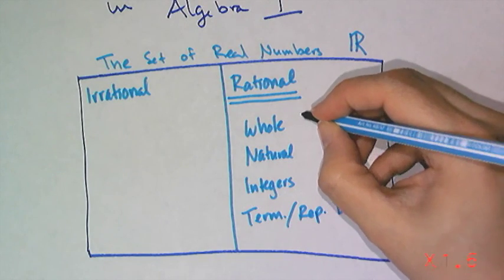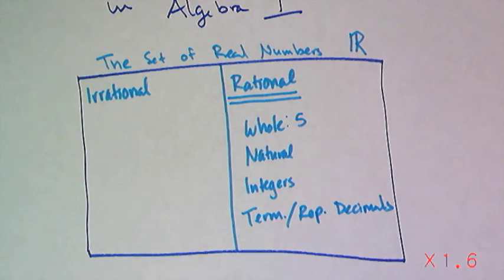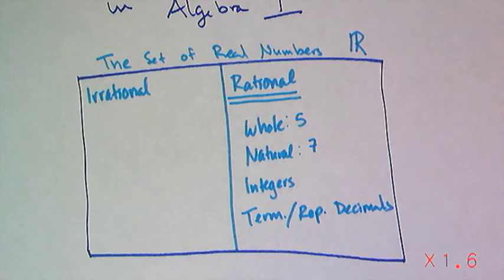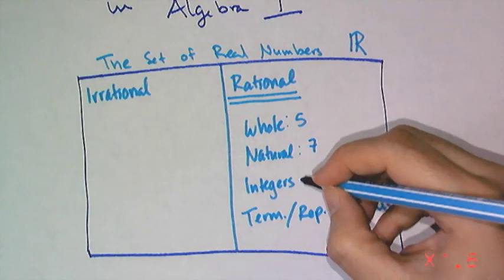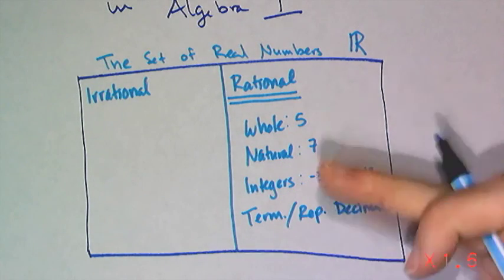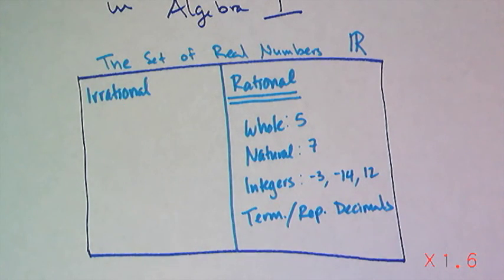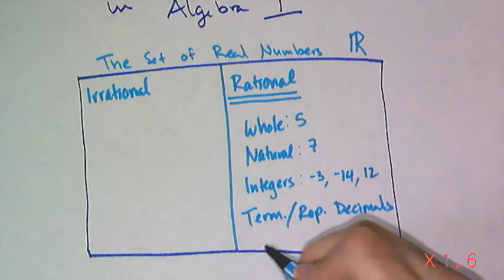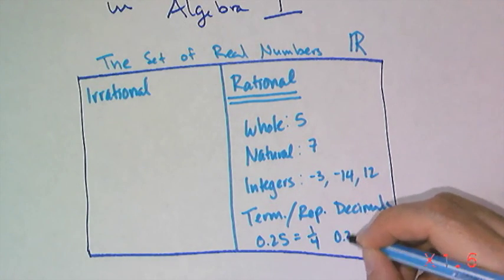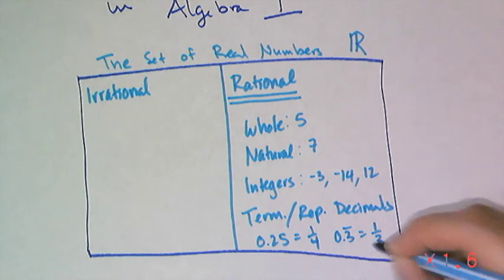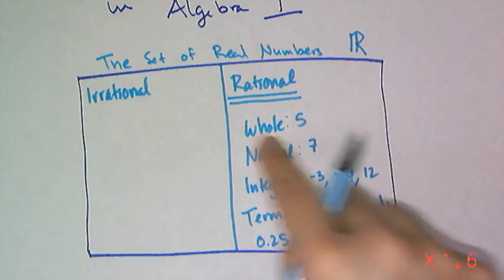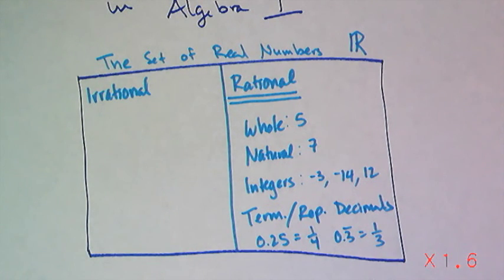And the definition of a rational number is a number that can be written as a ratio of integers. So whole numbers like 5 is an example of a rational number because you can write it as 5 over 1. Natural numbers like 7 can be written as a ratio of integers, mainly 7 over 1. Then, of course, we have the integers like negative 3 and negative 14 and 12. Those, of course, can all be written as ratios of integers. And then terminating decimals like 0.25 can be written as 1 fourth. And then, of course, 0.3 repeating can be written as 1 third. Now notice those ratios. Oh, my gosh, they're fractions. That's because fractions are rational numbers by definition.